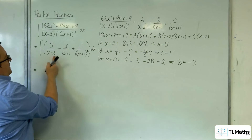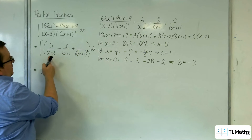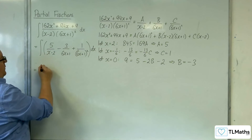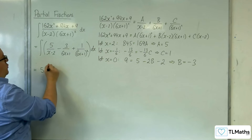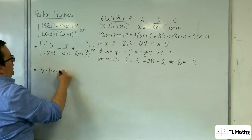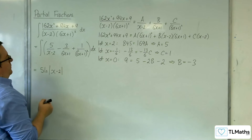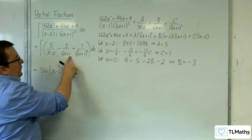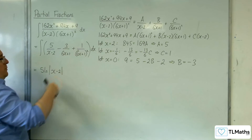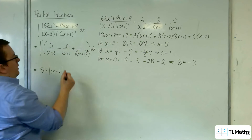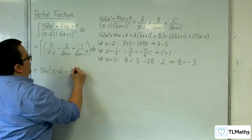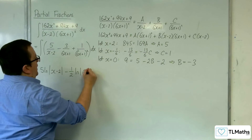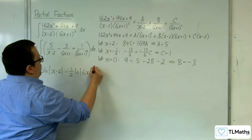For the first term, the denominator differentiates to 1 and we've got 5, so that integrates to 5 times the natural logarithm of (x − 2). For the second term, the denominator differentiates to 6 and we've got 3, so we have half of what we need, giving minus one half times the natural logarithm of (6x + 1).